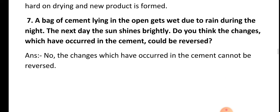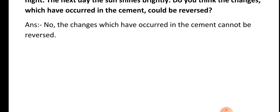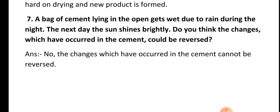Question seven: A bag of cement lying in the open gets wet due to rain during the night. The next day the sun shines brightly. Do you think the changes which have occurred in the cement could be reversed? Answer: No, the changes which have occurred in the cement cannot be reversed, because when the cement gets wet due to rain and dries under the sun, the cement gets solidified, and that solid form of cement you cannot convert back into its powder form.